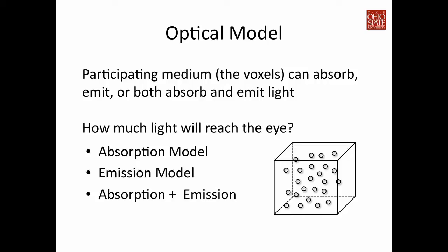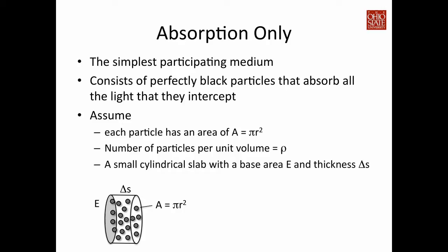Now let's look at the absorption model. We are assuming the participating media only absorbs light — it doesn't emit any light by itself. So you can imagine they are just black particles. Before we derive the equation, let's look at some assumptions. We assume each particle has an area of A, which equals π r². We also assume the density of the particle in the volume is called ρ. We have a small cylindrical slab with a bunch of particles inside. The thickness of the slab is Δs and the base area is E. These assumptions will allow us to derive an equation for the absorption-only optical model.